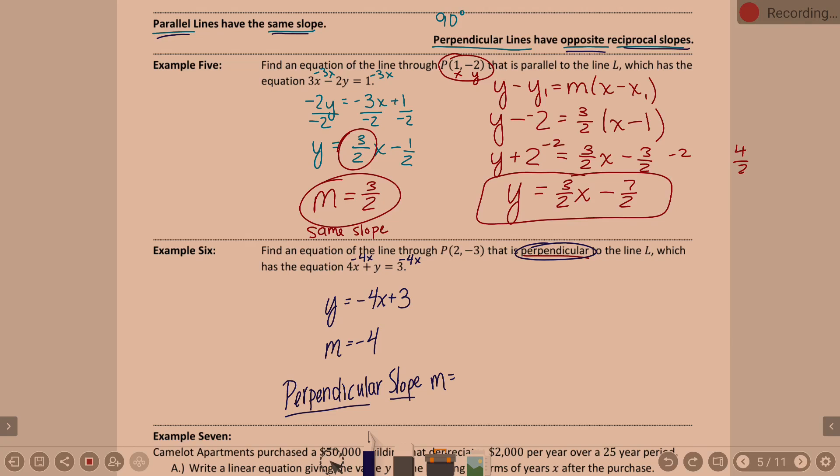So opposite of negative is positive. Reciprocal of 4: flip the numerator and the denominator, so it would be one-fourth. Keep in mind, 4 as a fraction is 4/1. So the reciprocal of 4/1 is 1/4.